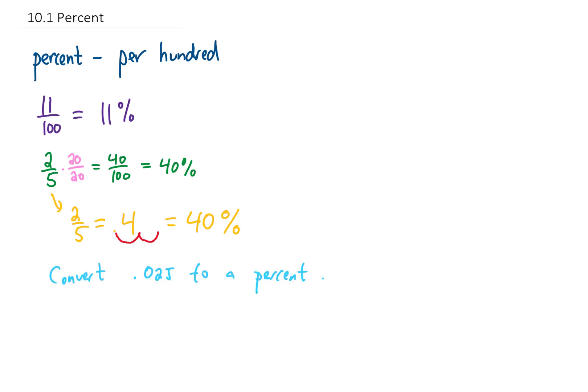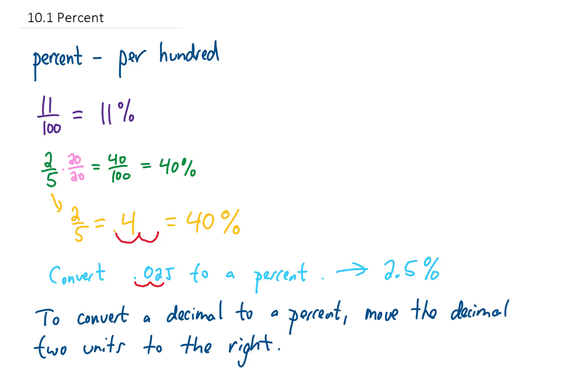If we wanted to convert 0.025 to a percent, we take that decimal place and move it two units to the right — that's the same as multiplying by 100 — and we get an answer of 2.5%. So what have we learned so far? If we want to convert a decimal to a percent, we move that decimal point two units to the right.